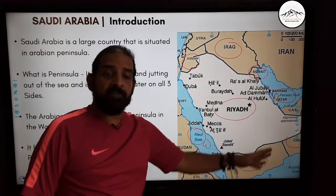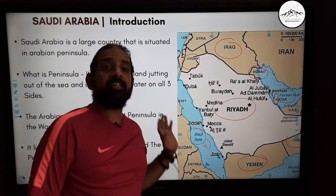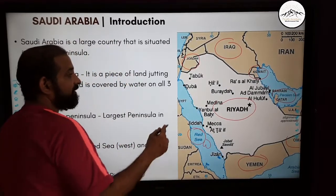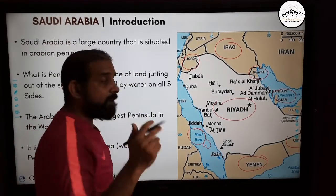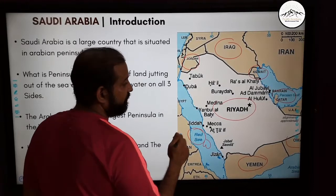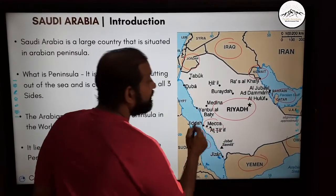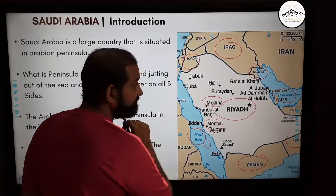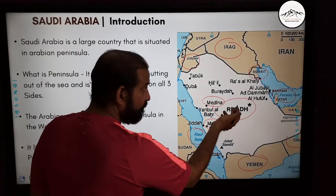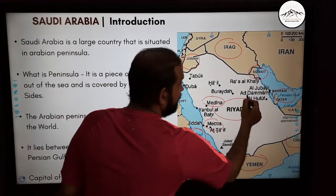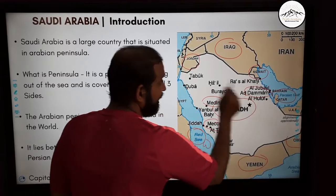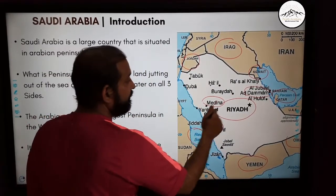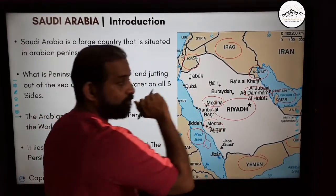These are the countries neighboring Saudi Arabia. Some important cities of Saudi Arabia are Makkah, which we will study in detail, Medina, Riyadh the capital, and Dammam, which has one of the international airports.